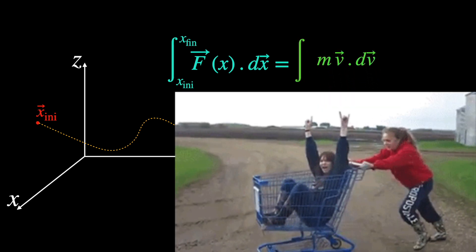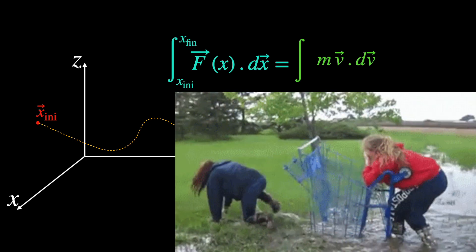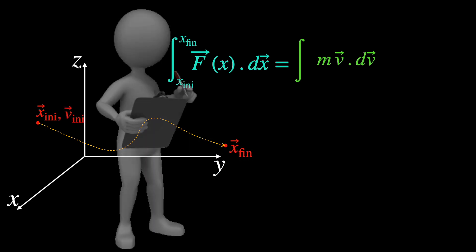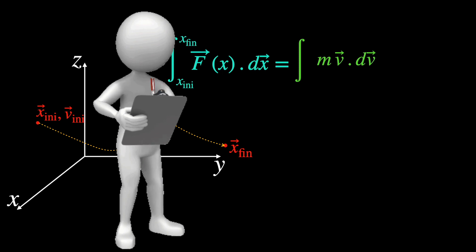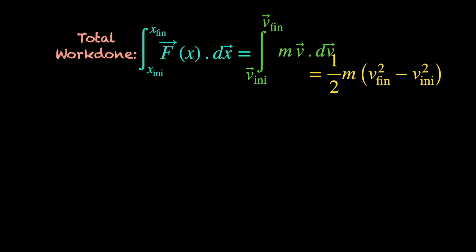Now, under any applied force, the object either accelerates or decelerates, so its velocity must change from some initial value v initial that it had when the force started to act on it or we started to observe it, to a final value v final when the force was withdrawn or we stopped observing. Naturally, the limits of this velocity integral are these initial and final velocity values. Upon integration, we see that the net amount of work done is the difference between half m v final squared and half m v initial squared.